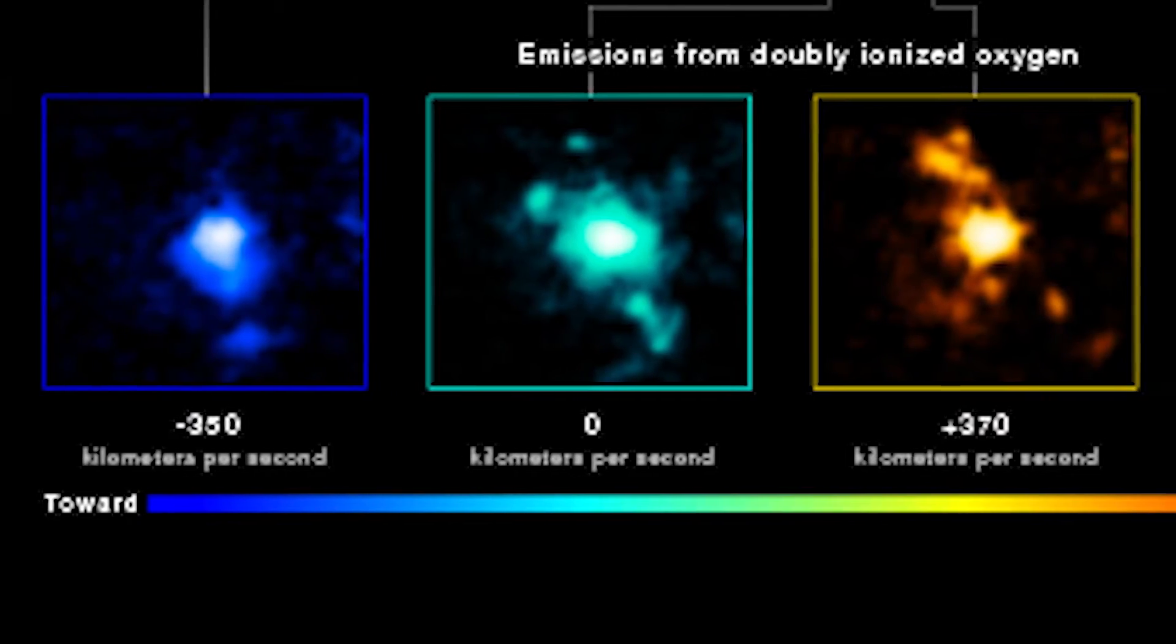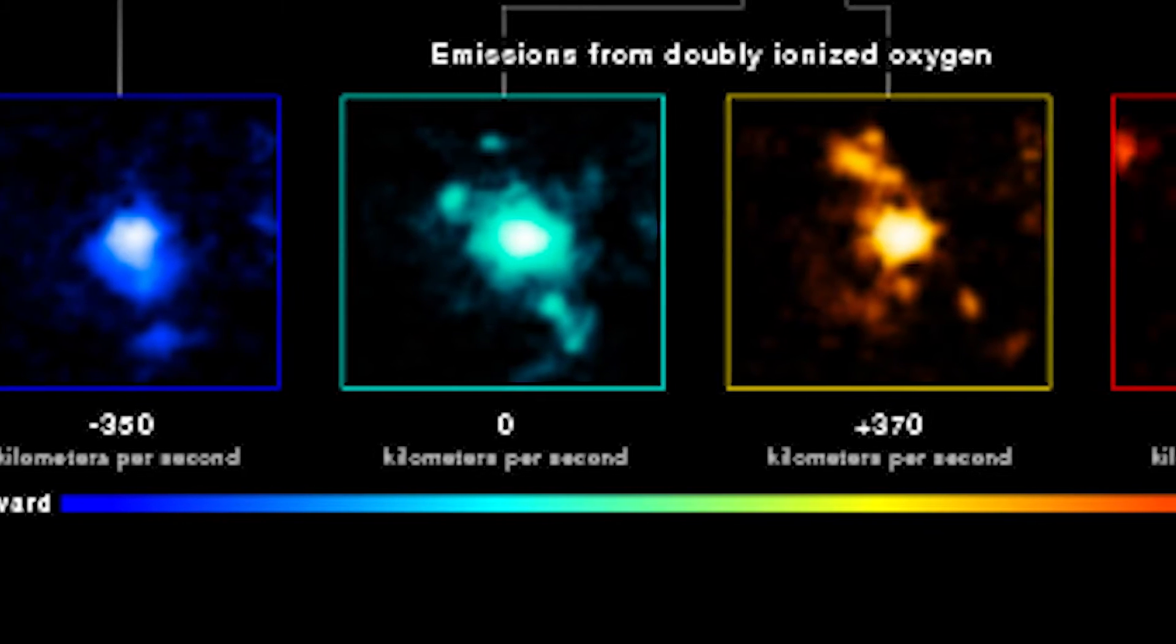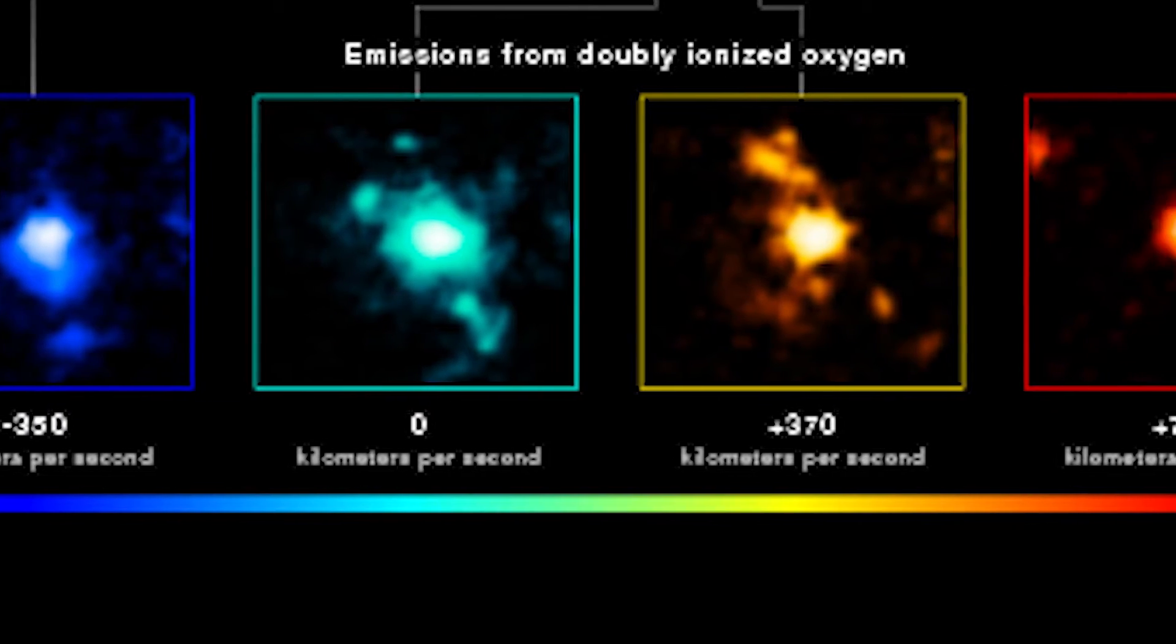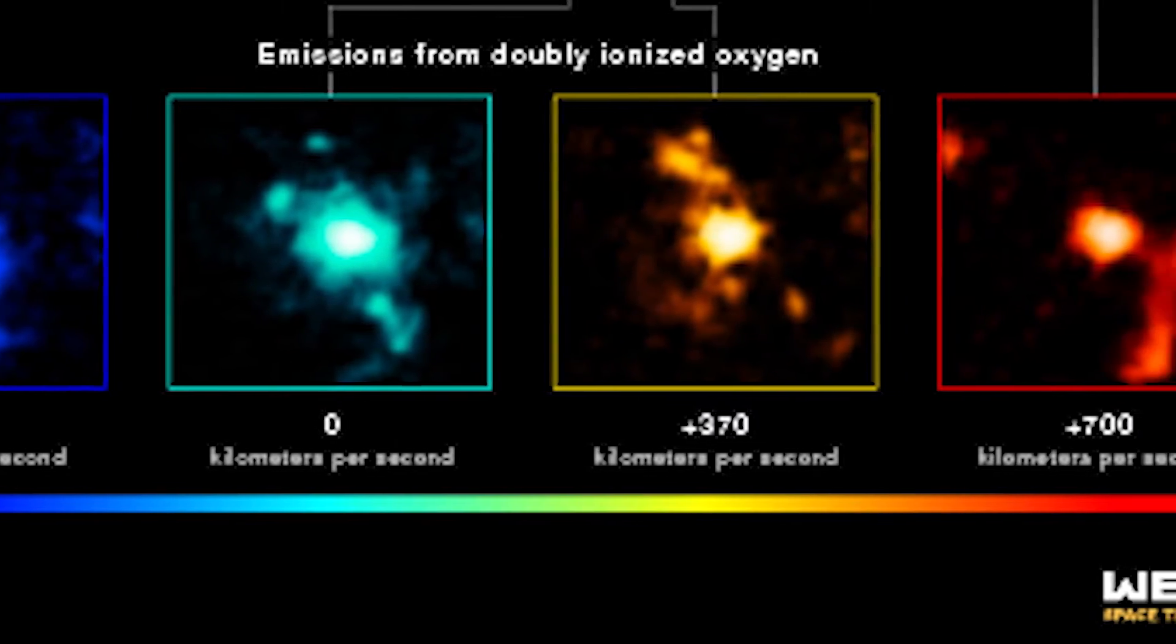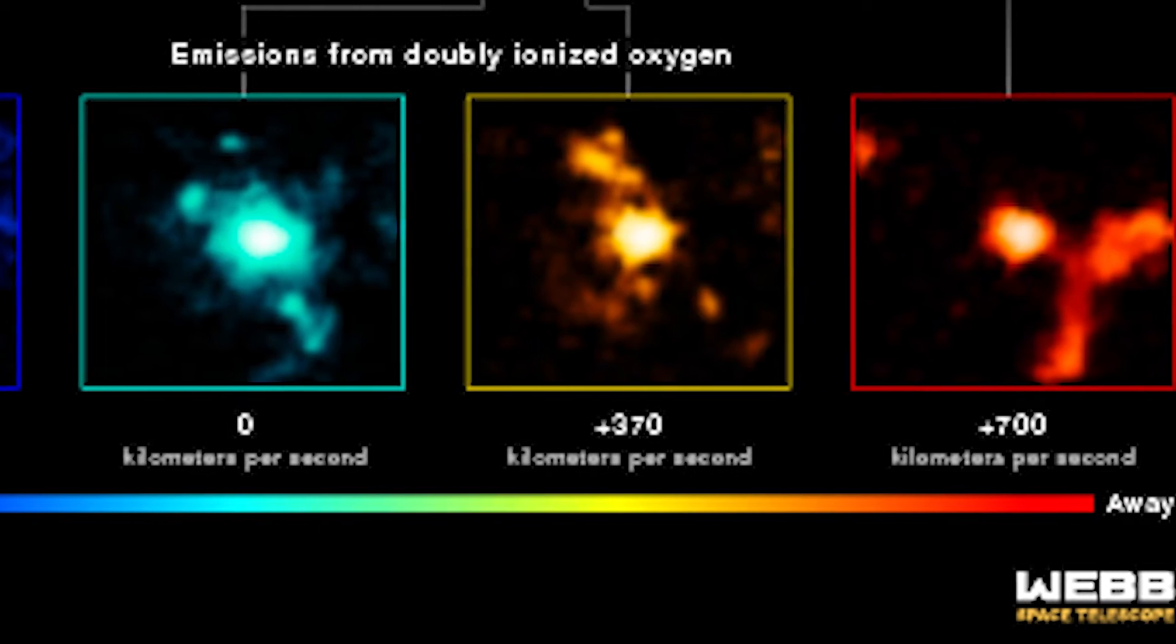Thanks to NIRSPEC's ability to collect spectra from all throughout the telescope's field of view at once, Webb can look at the quasar, its galaxy, and their larger surroundings all at once.